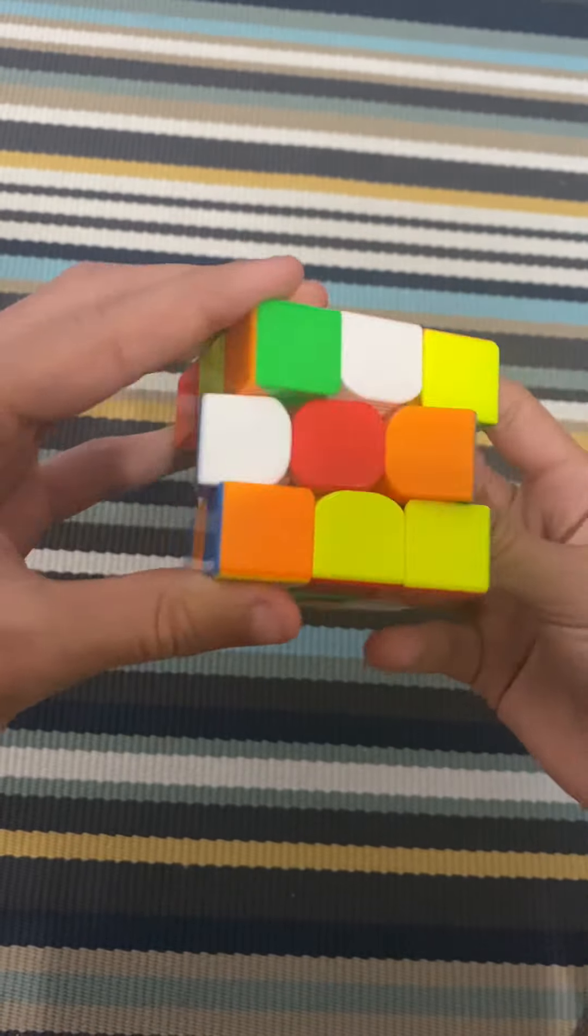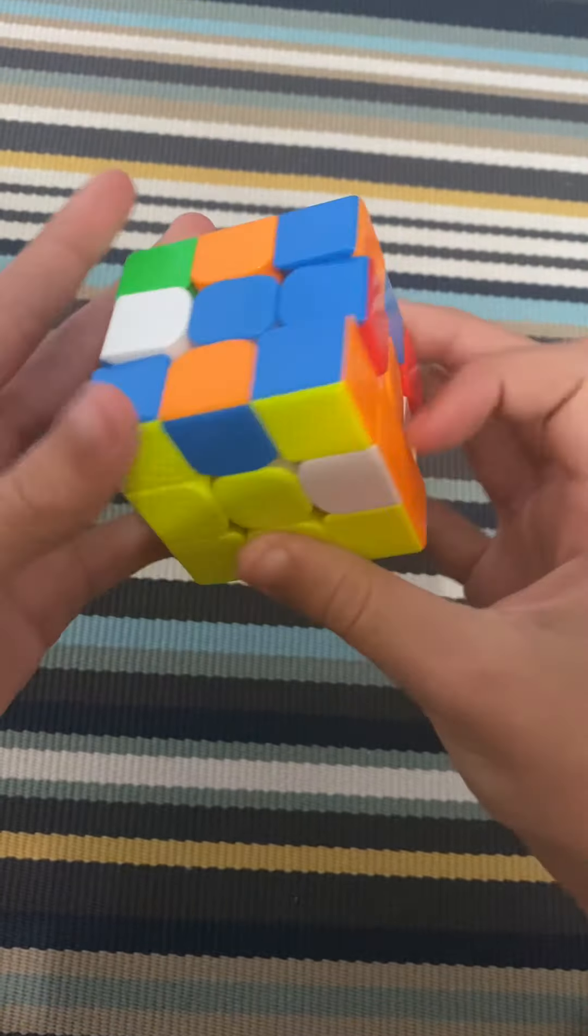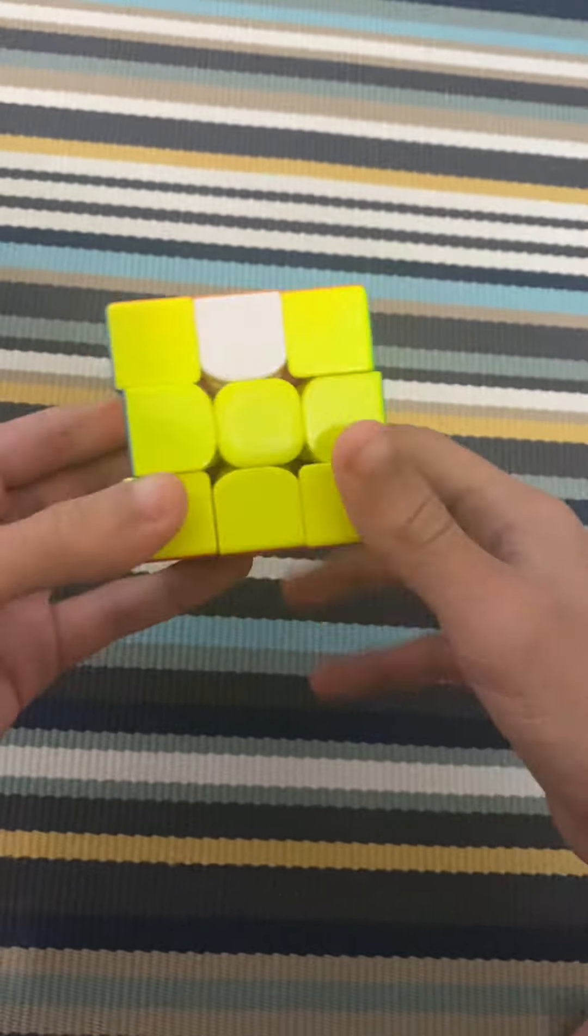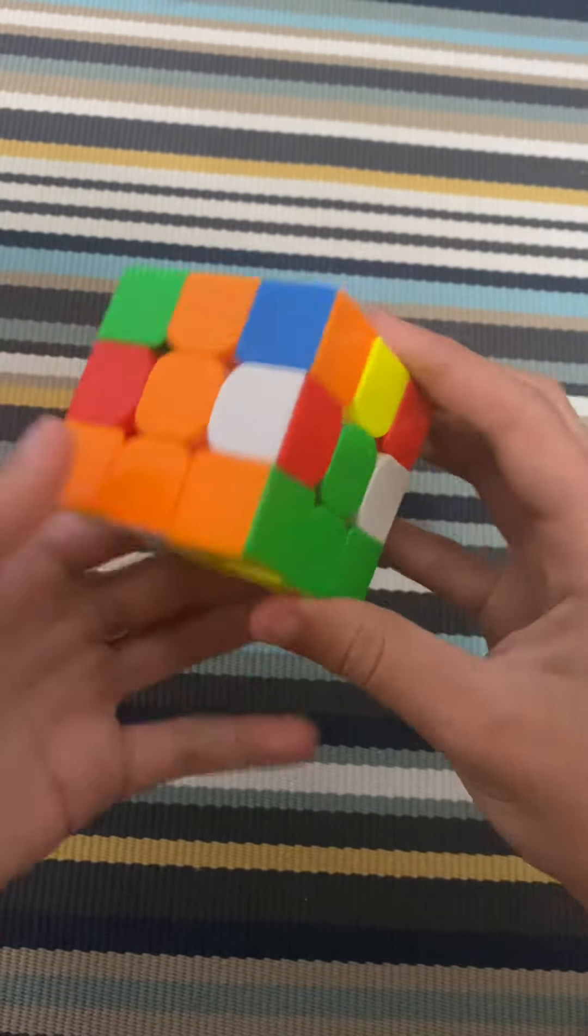That doesn't need to go out there, I was just showing an example. Oh wait, now I need to insert the yellow blue back. All right, so now that we have those three edges, we need to build these edges.